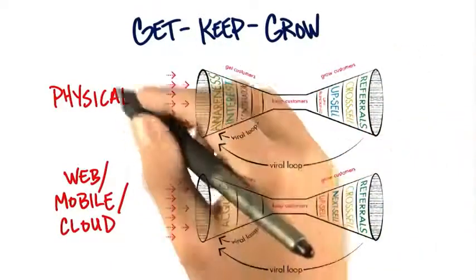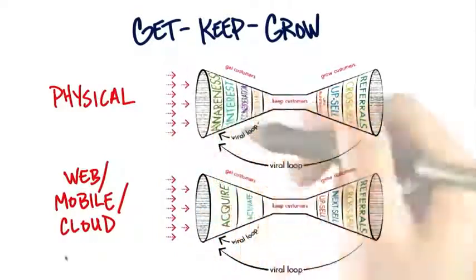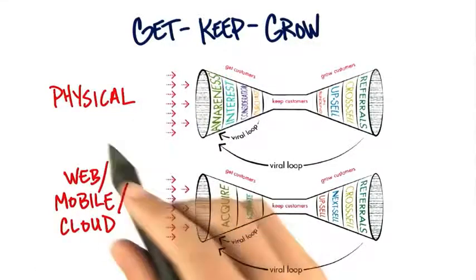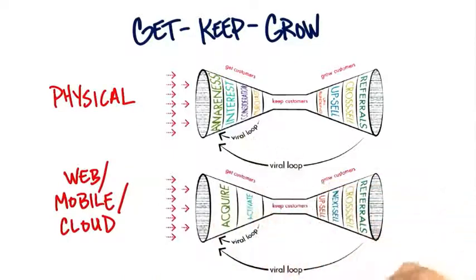And so these things on the left, with all these arrows going into the funnel, those represent all the demand creation activities you were doing, either paid or free. And in a physical channel, they were getting you into the funnel on the top.